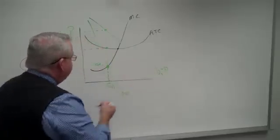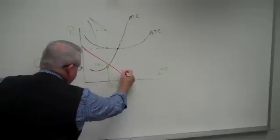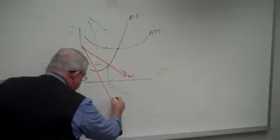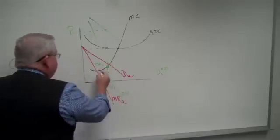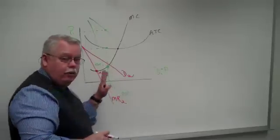And so when they have fewer buyers their demand curve shifts in. Let's shift it way in here. Here's the new demand curve number two. And here's the new marginal revenue curve number two. And here's the new point alpha, alpha two. Everybody following that with me? How's life by the way?